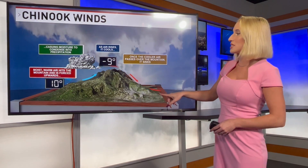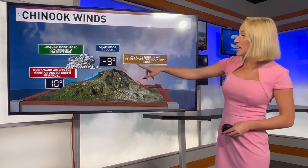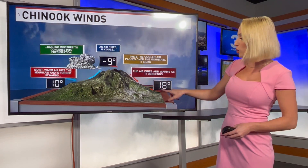Then as air rises, it also cools. Let's say our temperature drops down to negative 9 degrees. As the air passes over the mountain and goes down the other side, it will sink. And as it sinks, it warms and it dries. And as it dries and warms, let's say the base temperature down here is about 18 degrees.